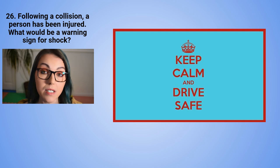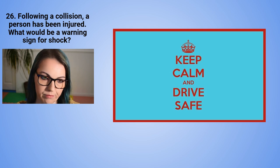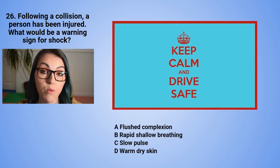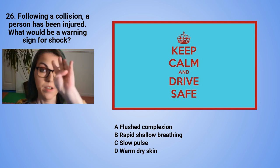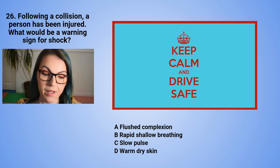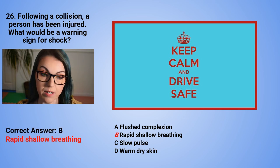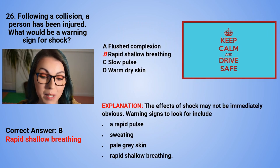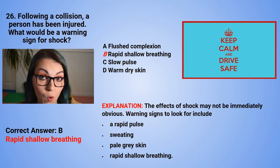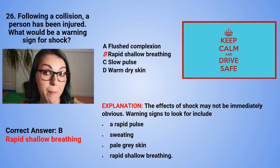Question 26: Following a collision, a person has been injured. What would be a warning sign for shock? A. A flushed complexion. B. Rapid, shallow breathing. C. A slow pulse. Or D. Warm, dry skin. The correct answer is B — rapid, shallow breathing. The effects of shock may not be immediately obvious. Warning signs include a rapid pulse, sweating, pale or grey skin, or rapid, shallow breathing.